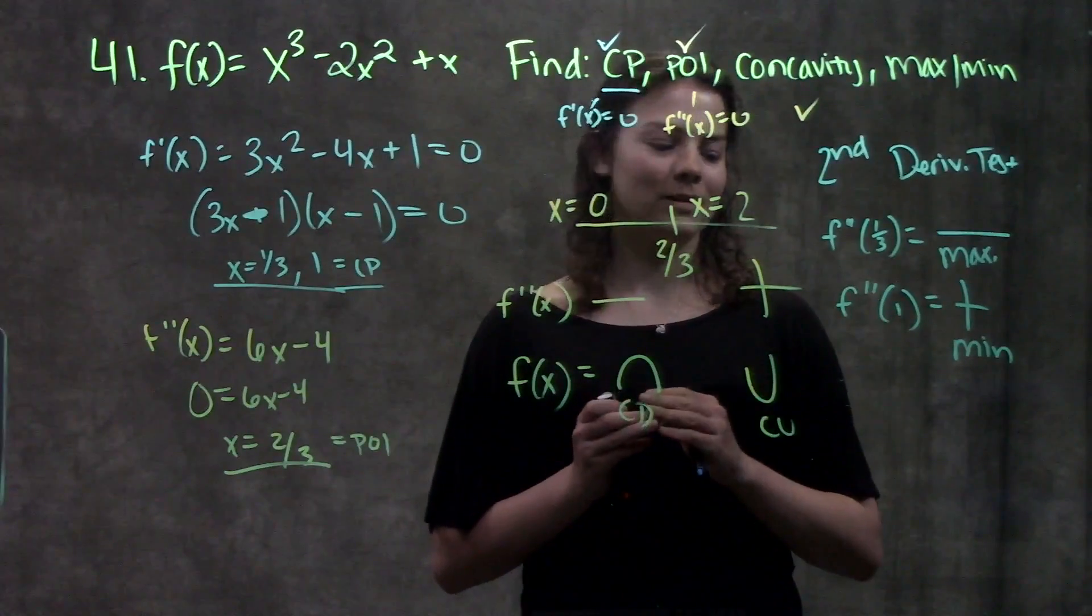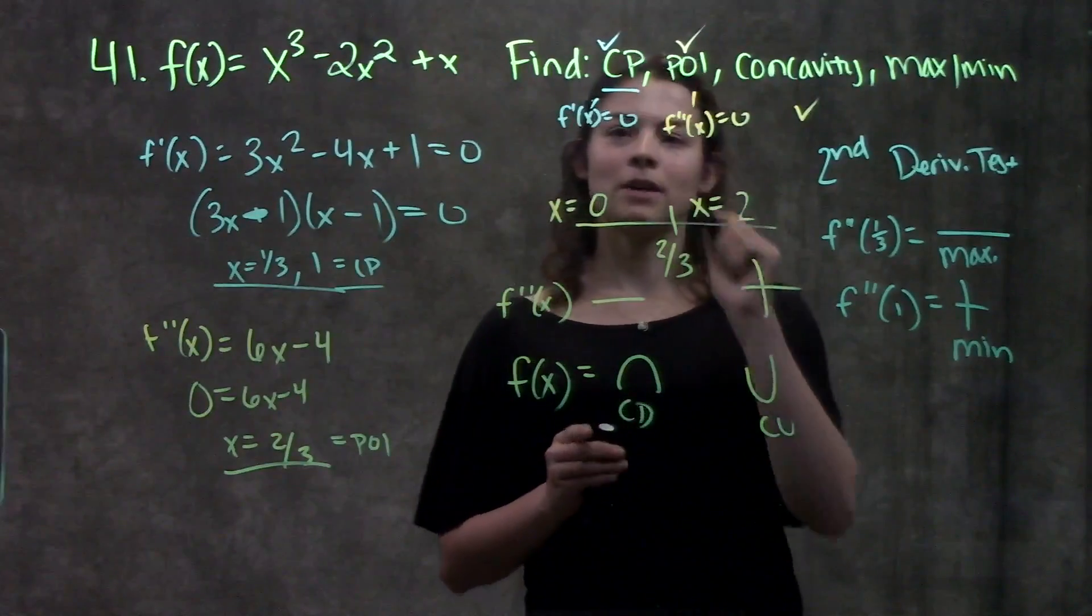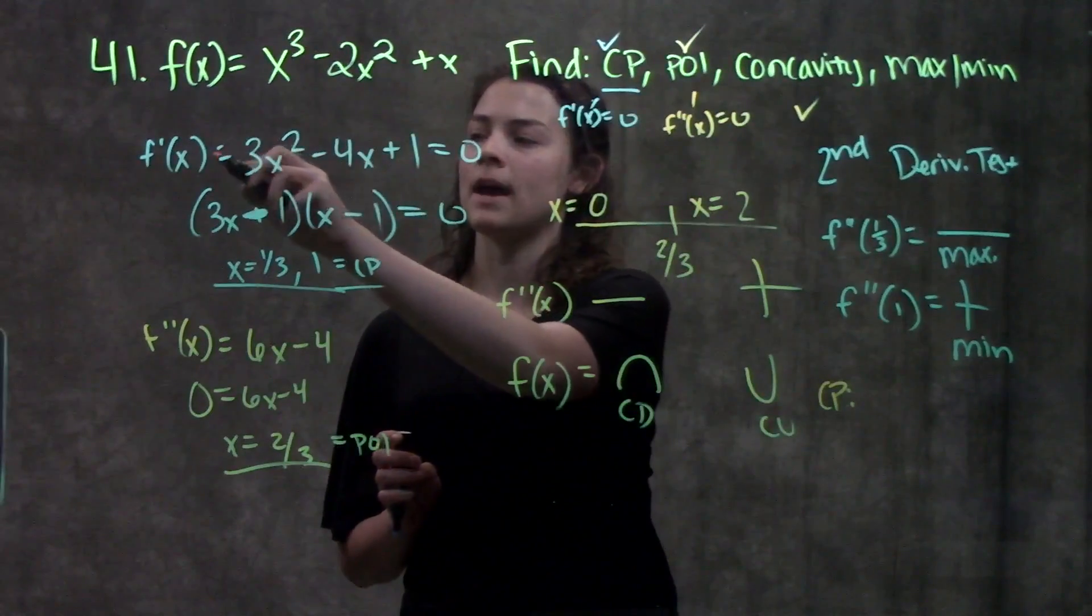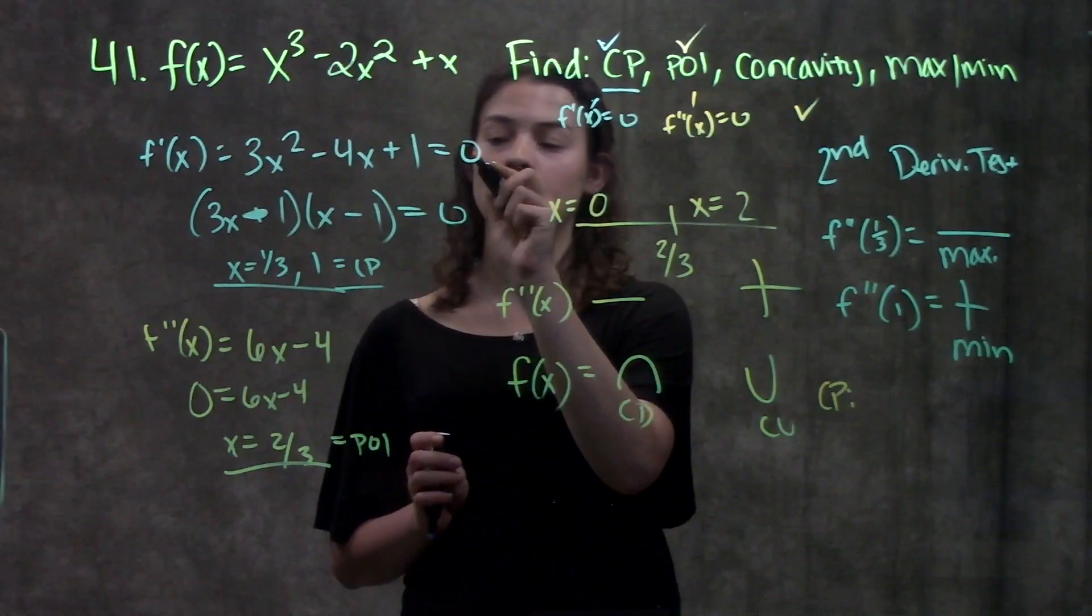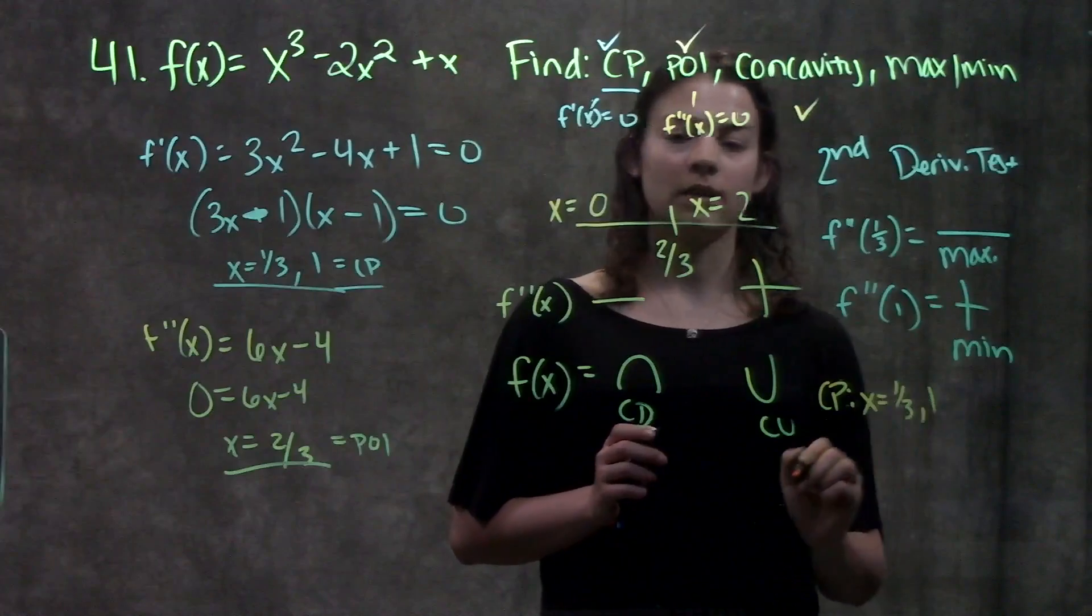Okay, let's consolidate all of our answers into one convenient little box over here. So the first part they're asking for is my critical points. My critical points I found by taking my first derivative, setting it equal to 0. And I got that my critical points are x equals 1 third and x equals 1.